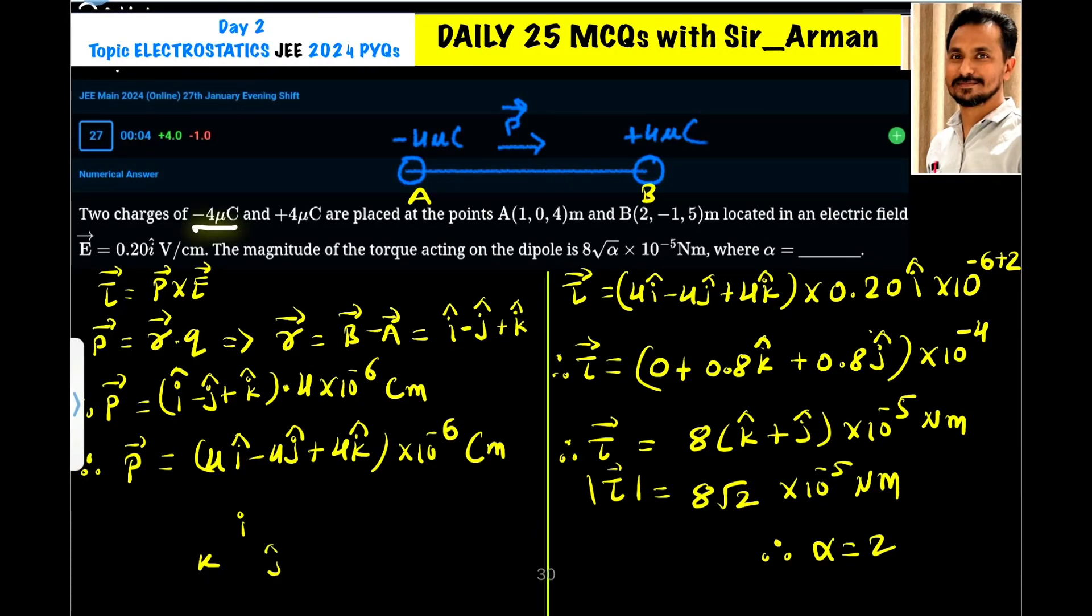Two charges, minus 4 micro coulombs and plus 4 micro coulombs, are placed at points A(1, 0, 4 meters) and B(2, -1, 5 meters) located in an electric field E equals 0.20 I cap volt per centimeter.